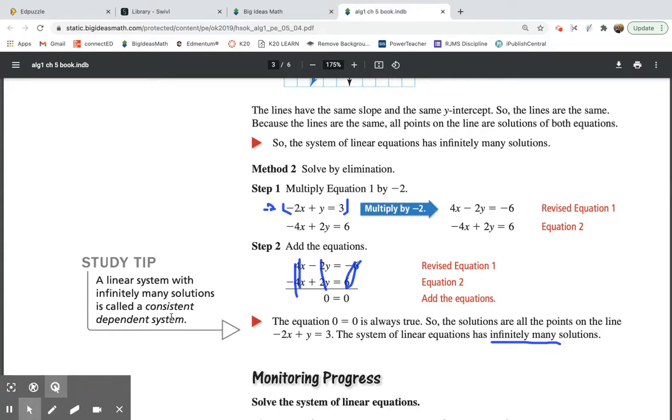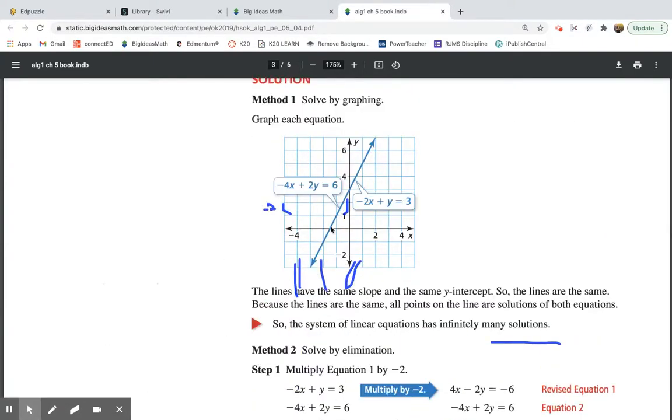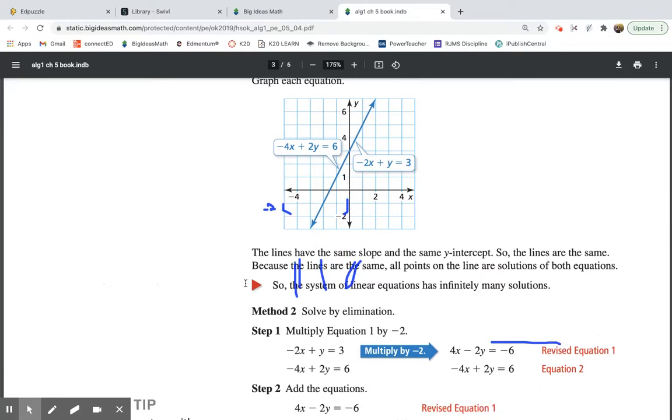Also, when they graph it, when you graph them, they are the same line. So it would just graph on top of each other.